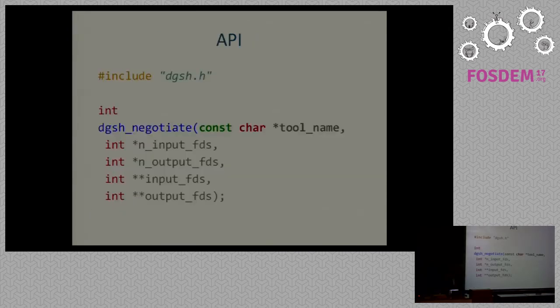There's an API with a single command. You can convert any Unix program to work with DAGSH. So what you do is you call DAGSH negotiate. You pass the tool name, the number of file descriptors that you want, the number of input file descriptors and output file descriptors that you want. And as a result, you get the input file descriptors and output file descriptors that your tool can use. So you say, I want four input file descriptors and five output file descriptors. You get them, and you play with them. And that's all.